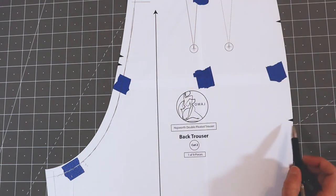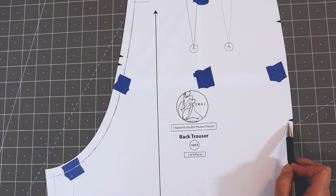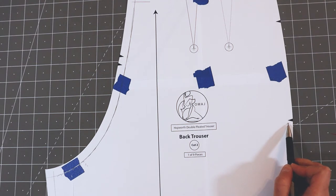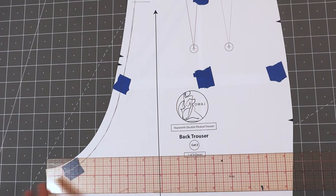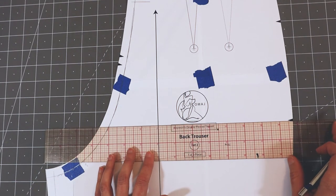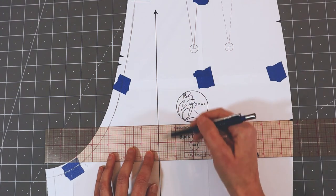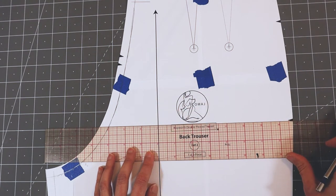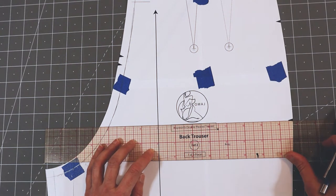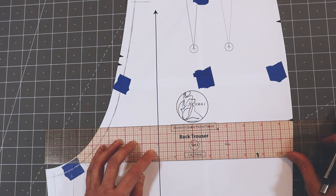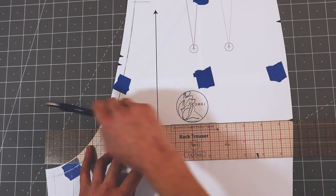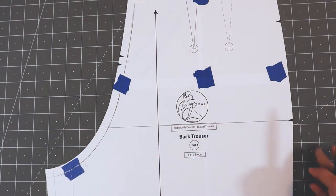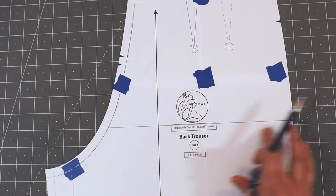To do this, we'll start by locating the hip notch on our pattern. If your pattern doesn't have a hip notch or you're having trouble locating it, on high-waisted pants it's normally a third of the distance from the crotch to the waist measured up from the crotch line along the side seam, and about halfway up on low-rise pants. Once we've located our hip notch, we'll align our ruler with the grain line, making sure it's square and at a 90-degree angle with our hip notch, and draw a line straight across the hip.